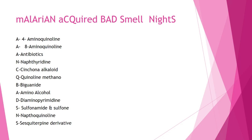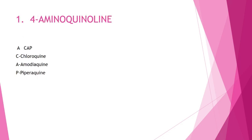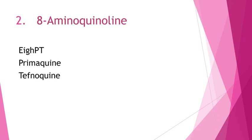The mnemonic MALARIAN ACQUIRED BAD SMELL NIGHTS helps remember all 12 classes. For the first class, four-aminoquinoline, we have three drugs. The mnemonic is CAP: C is chloroquine, A is amodiaquine, and P is piperaquine. The next class is eight-aminoquinoline.